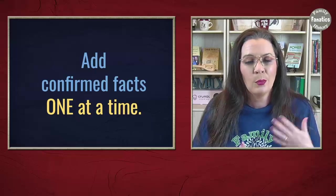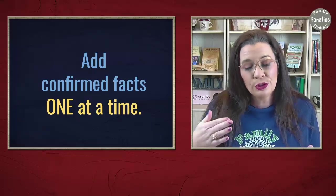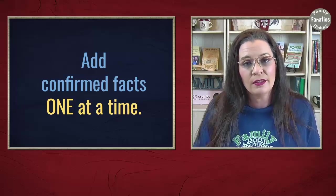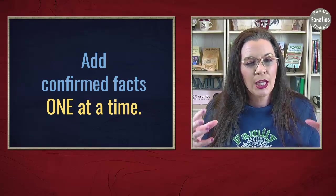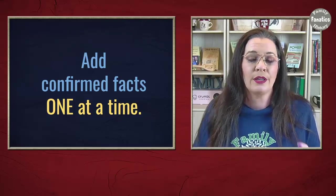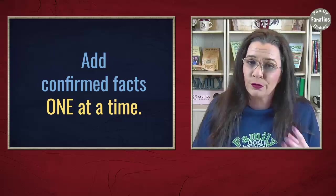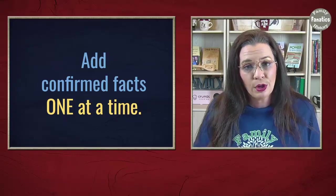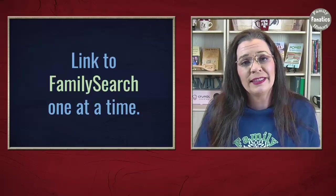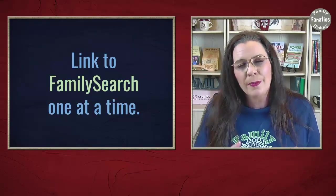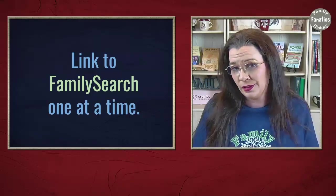Add a fact one at a time, and put your sources in one at a time. You're doing this because you want to ensure that you have captured every clue that those records had. You're looking over them again for the third, fourth, or fifth time, but you do it over and you do it slowly. And as you become confident in the different facts that you have, go ahead and link individuals to FamilySearch.